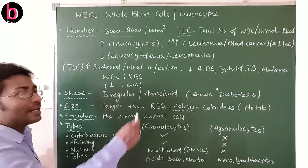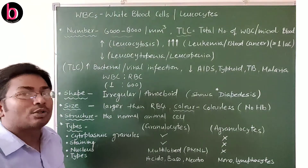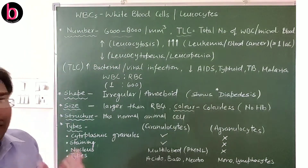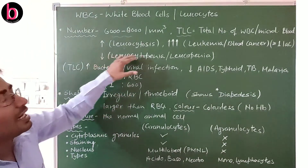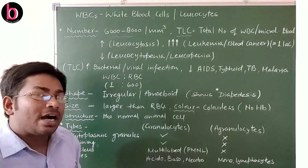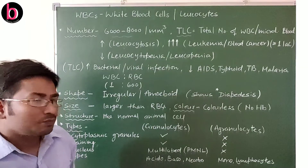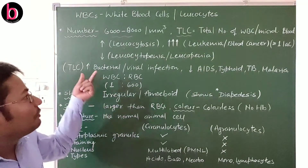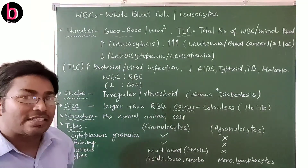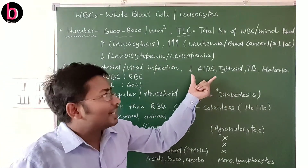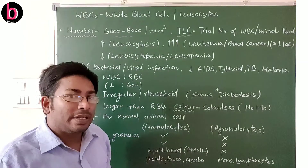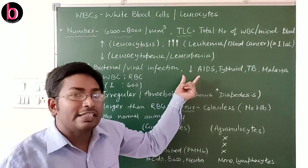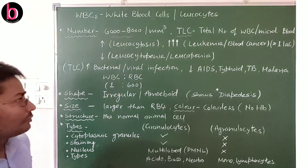In leukemia, the number of WBCs may rise and reach up to one lakh or more per cubic millimeter, while the normal range is 6000 to 8000. In some cases there may be a decrease in the number of WBCs — this condition is known as leukocytopenia or leukopenia. Usually WBC count increases during bacterial or viral infection, but in HIV-infected AIDS, tuberculosis, typhoid, and malaria, the number of WBCs decreases.